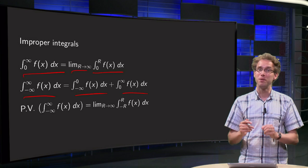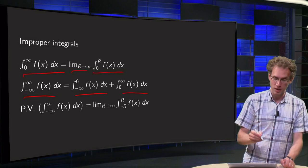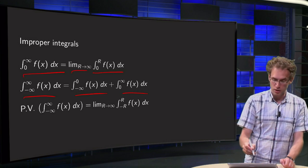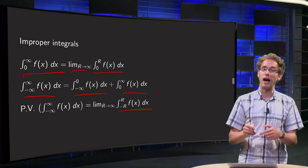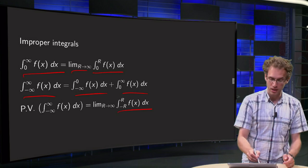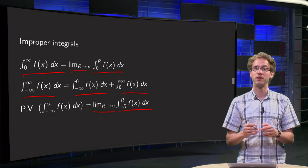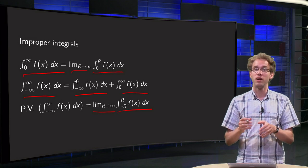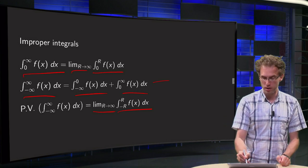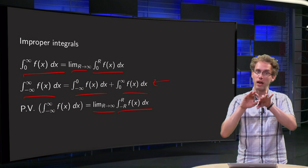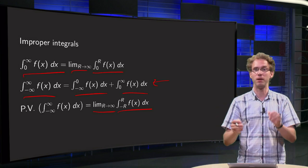What is the principal value of an integral? You integrate from minus r to r, and then take one single limit as r goes to infinity. That's a bit different from the notion of the improper integral, where you have to split up first and take two separate limits.